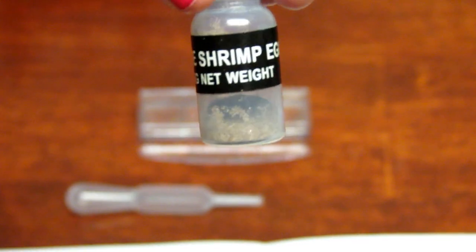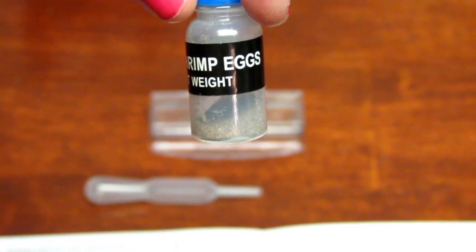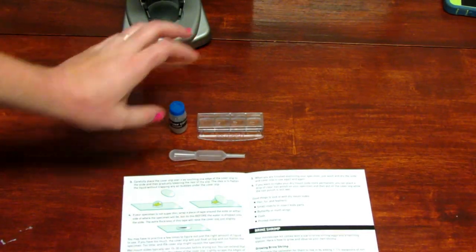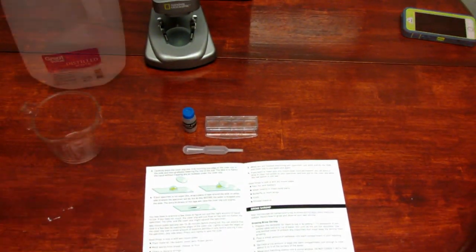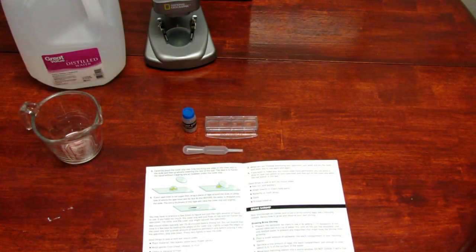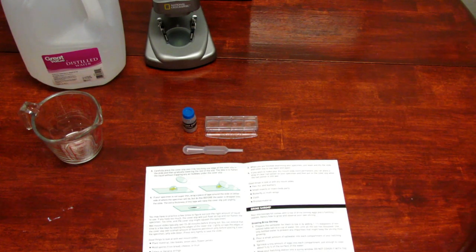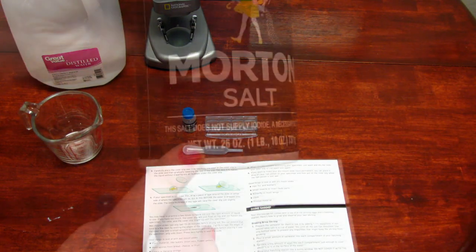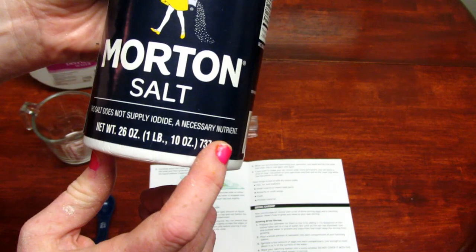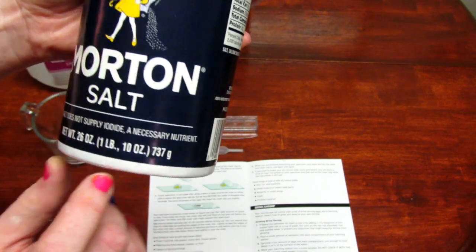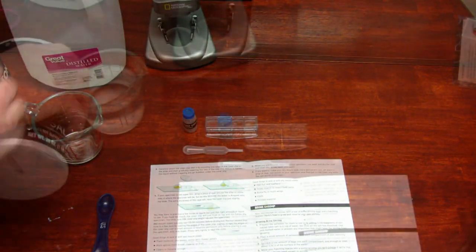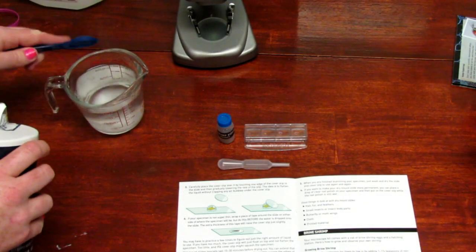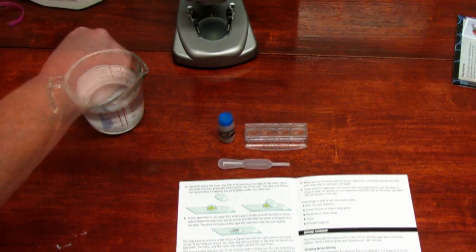This does come with a vial of brine shrimp eggs, also known as sea monkeys, for you to hatch. Now what you do is you're going to have to prepare the salt water, and you're going to use bottled water so there's no impurities in it. I had distilled water, and you need salt that is not ionized, non-ionized salt, and they're supposed to start hatching in 24 to 48 hours.